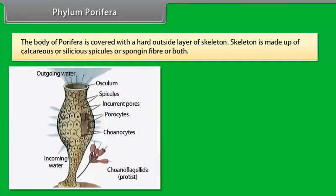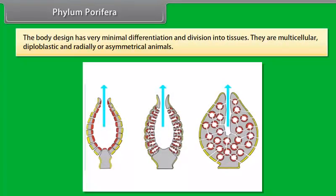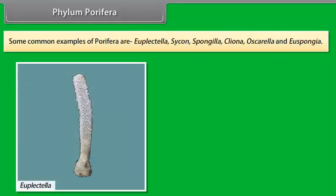The body of Porifera is covered with a hard outside layer of skeleton. The skeleton is made up of calcareous or siliceous spicules or spongin fiber or both. The body design has very minimal differentiation and division into tissues. They are multicellular, diploblastic, and radially or asymmetrical animals. Some common examples of Porifera are Euplectella, Sycon, Spongilla, Cliona, Oscarella, and Euspongia.